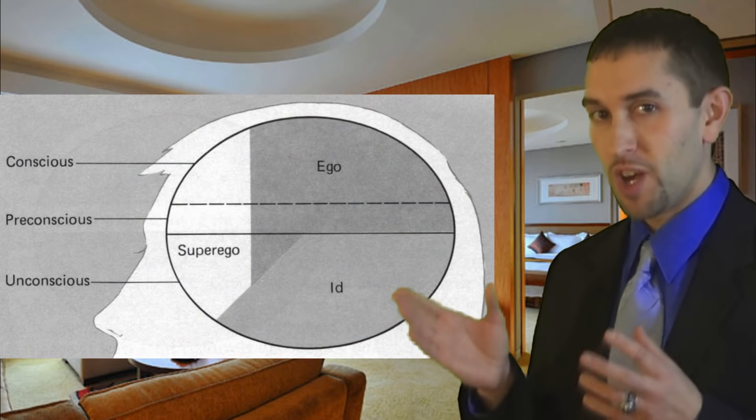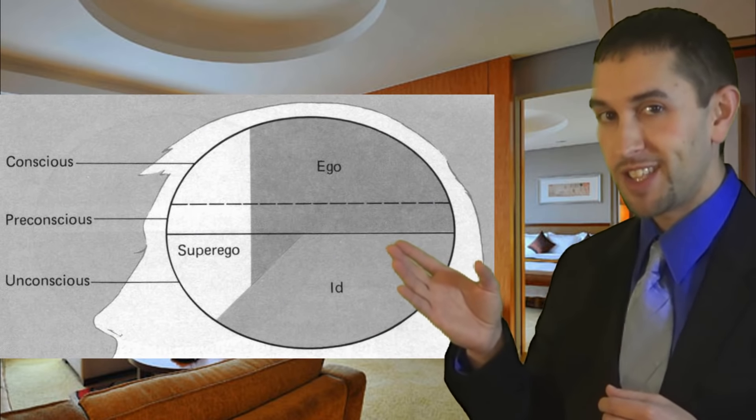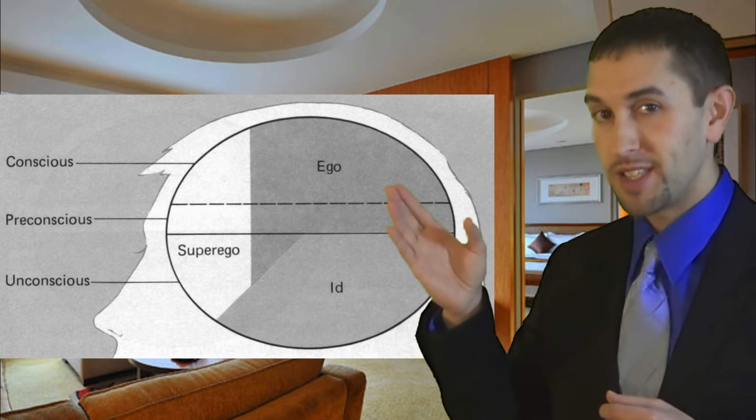Here's a diagram where you can see where each one falls as you travel upwards from the unconscious to the preconscious, and ending at the conscious level of the mind.